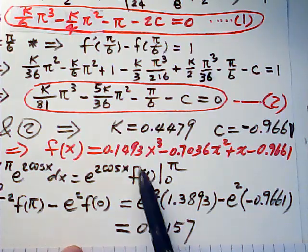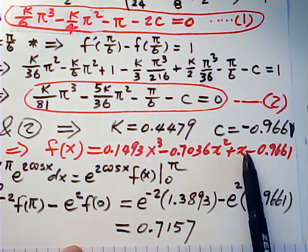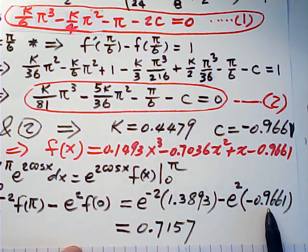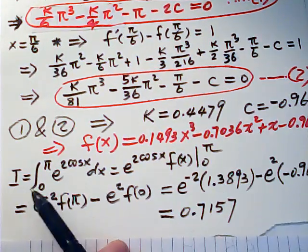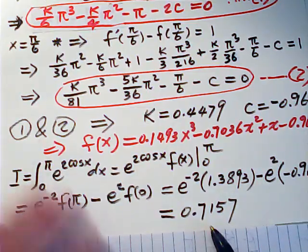This value is by plugging x as pi. You get this one. When x equals zero, this is the value. So that is the overall integral value approximately to four decimal places.